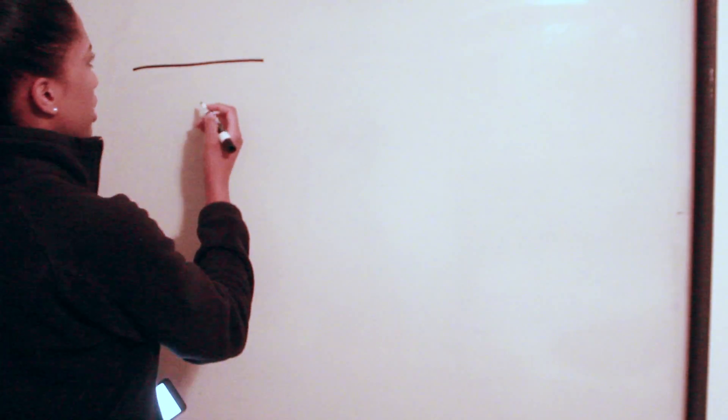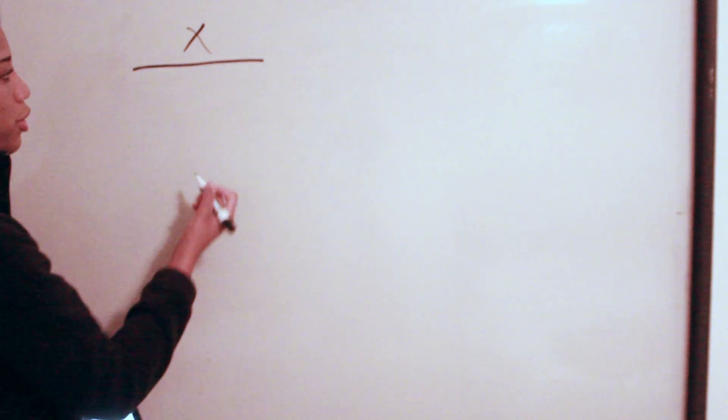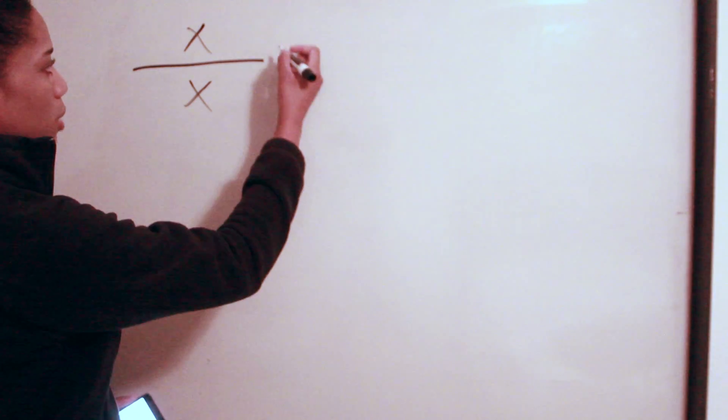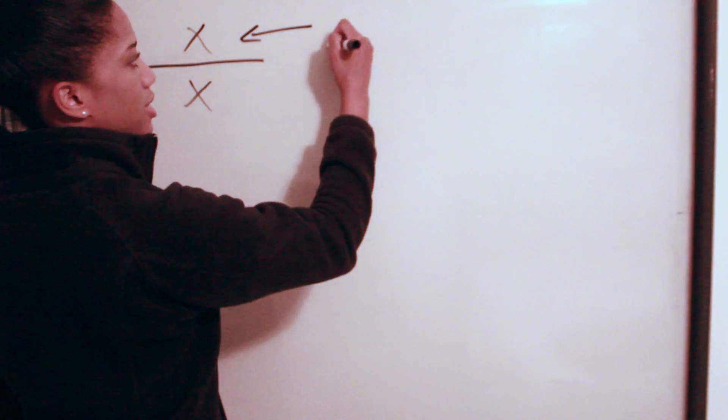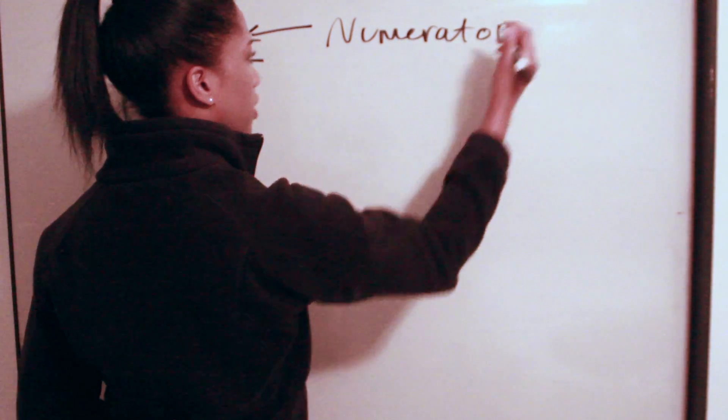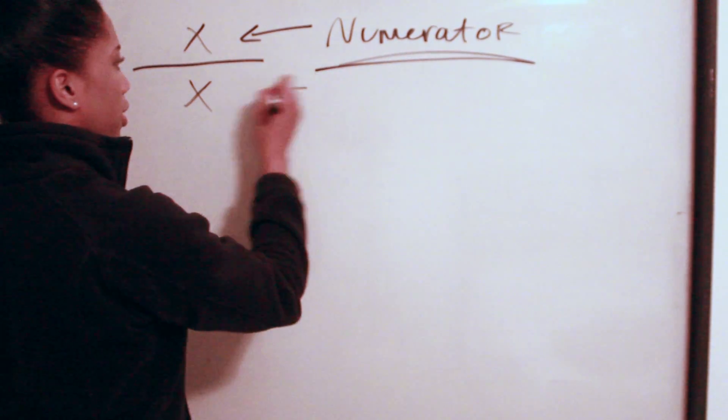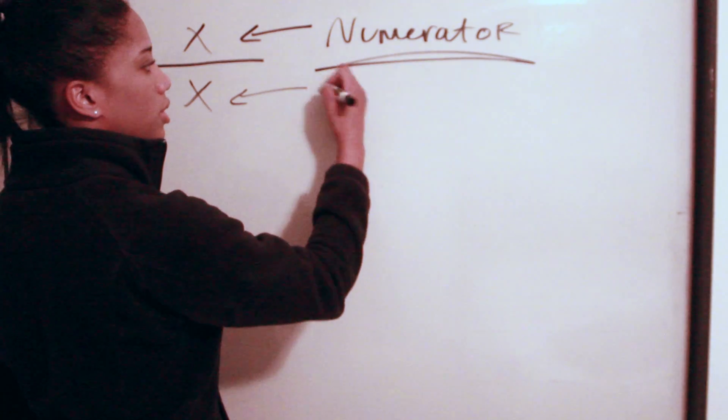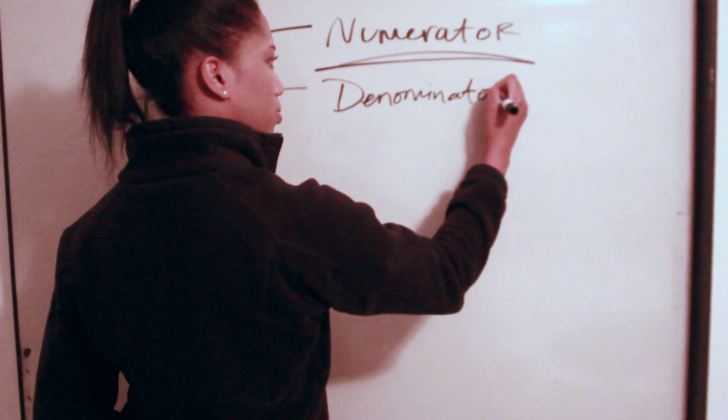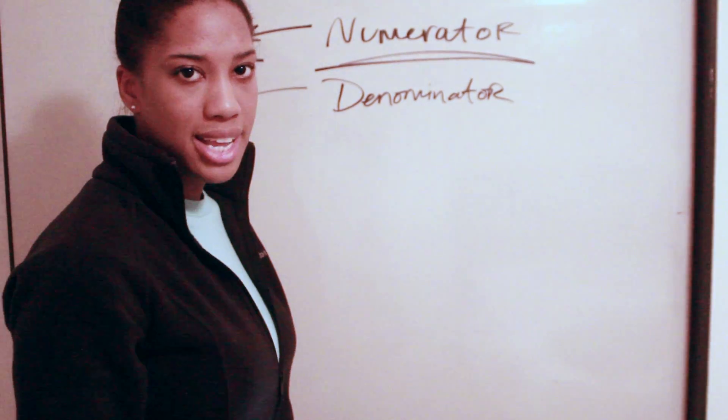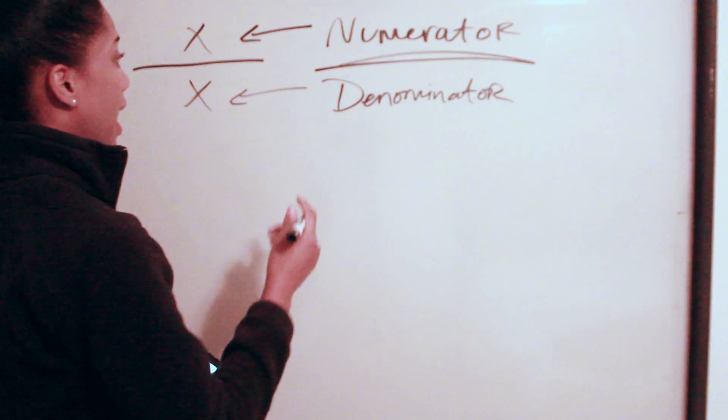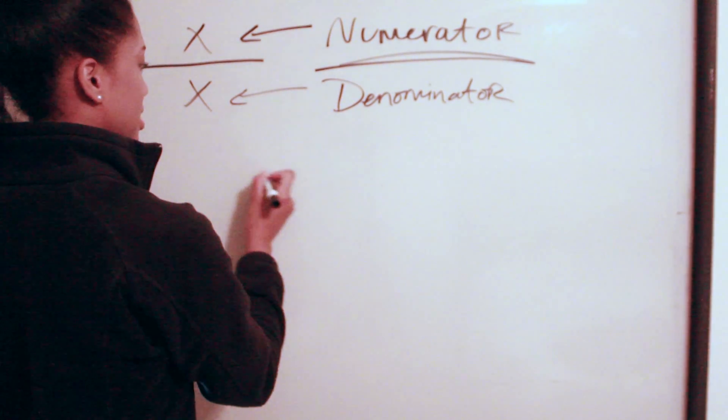Okay, so with fractions, this is what a fraction looks like: you're going to have some number over some other number. This number is called the numerator. The bottom number here is called the denominator. So basically what this signifies is it's just one number over another number.